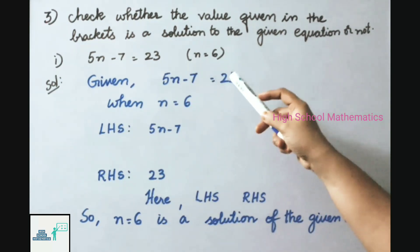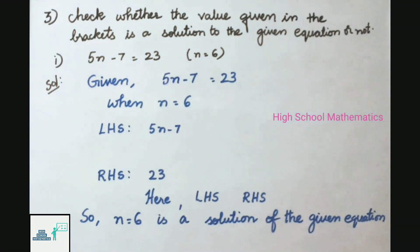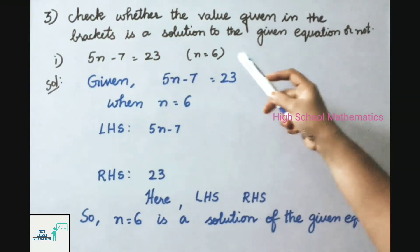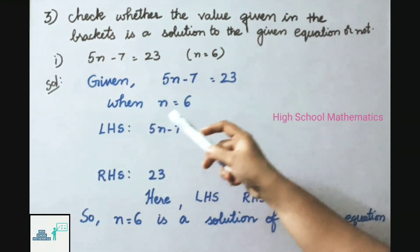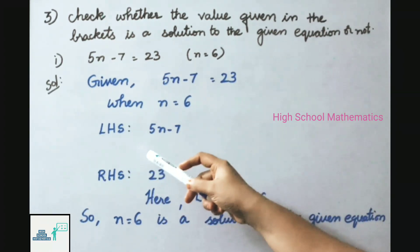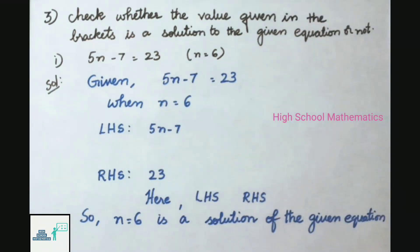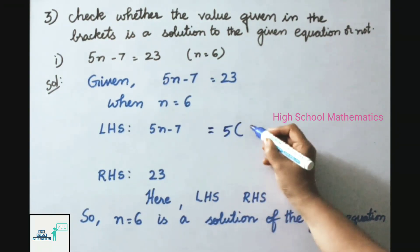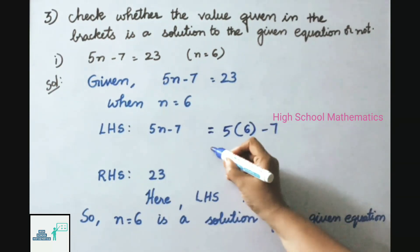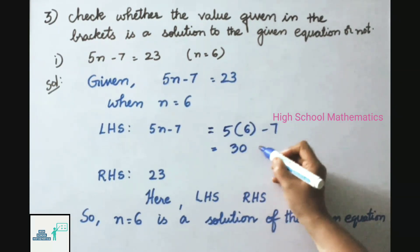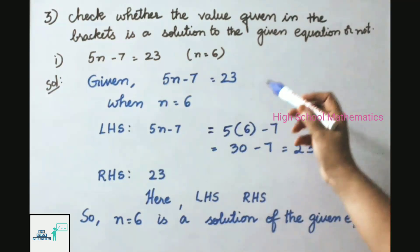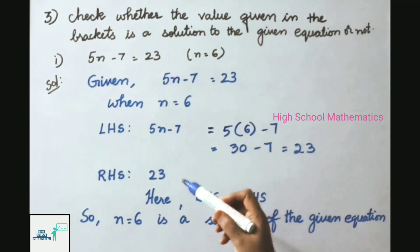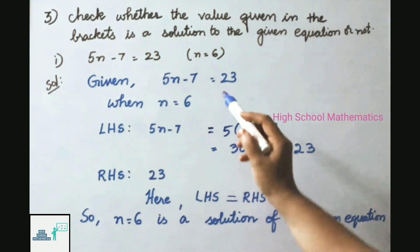Question 3: check whether the value given in the brackets is a solution to the given equation or not. First sum: 5n − 7 = 23, given n = 6. LHS = 5n − 7 = 5(6) − 7 = 30 − 7 = 23. RHS = 23. Since LHS equals RHS, n = 6 is a solution of the given equation.